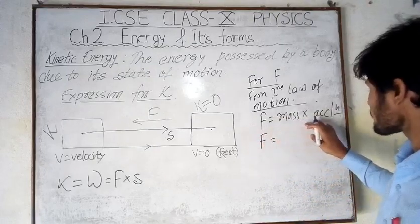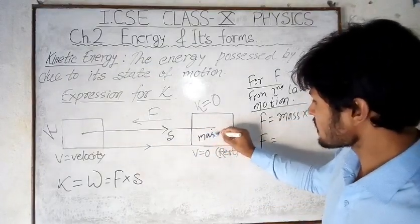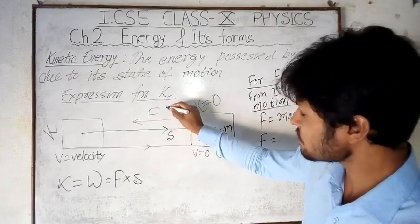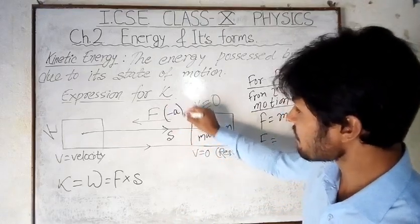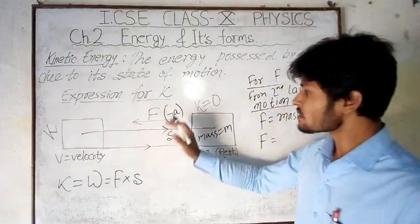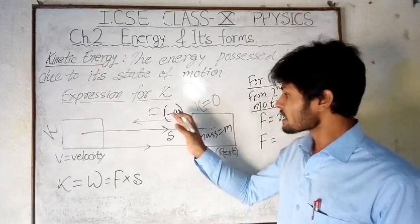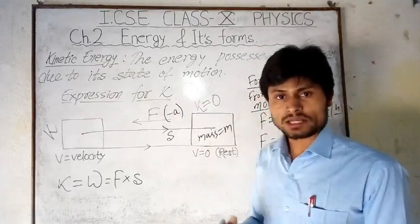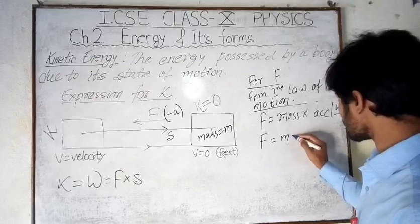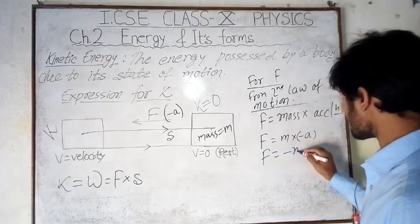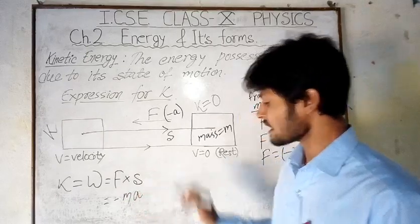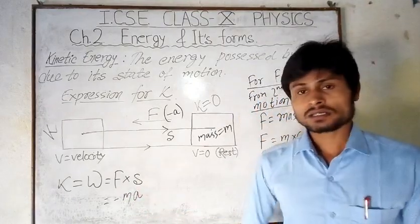From the second law of motion, force equals mass into acceleration: F = ma. We consider the mass of the body as m. The acceleration here is taken as minus a, because this force is against the motion — that means there is retardation. As the body is slowing down, the acceleration is negative, reducing the velocity. So F = -ma.